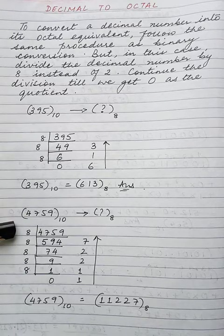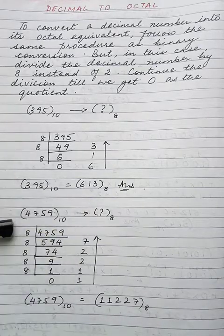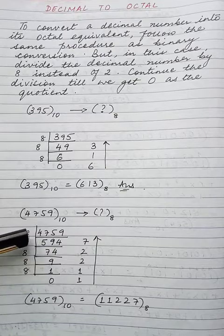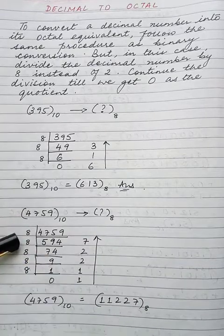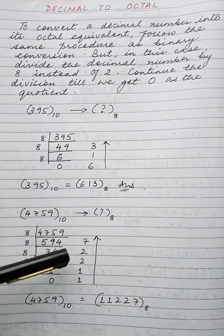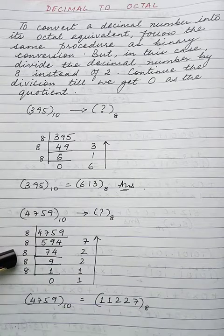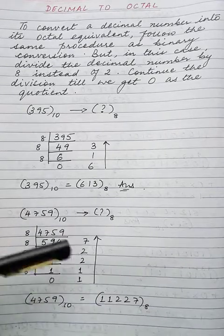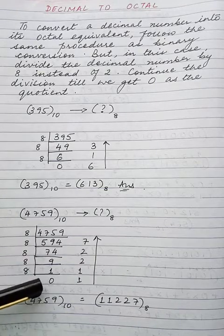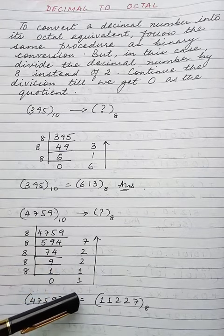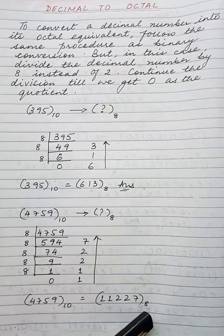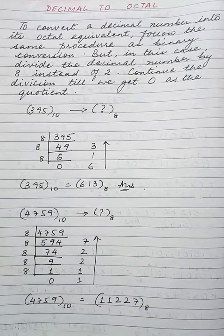Another example: 4759 base 10 is to be converted into its octal equivalent. When divided by 8 it gives quotient 594 and remainder 7. Again divided by 8 we get quotient 74 and remainder 2. Again divided by 8 we get quotient 9 and remainder 2. Again divided by 8 we get quotient 1 and remainder 1. So when we write from bottom to top the answer is 11227 base 8, which is the octal equivalent of 4759.